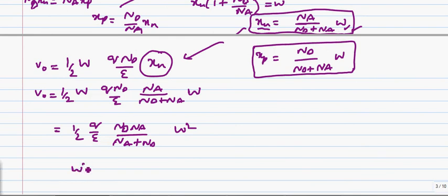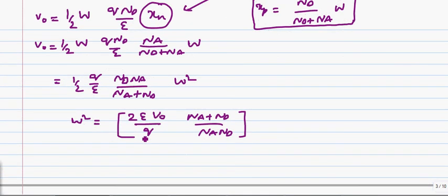w squared can be written as 2·epsilon·v_0 over q times n_a plus n_d over n_a·n_d.